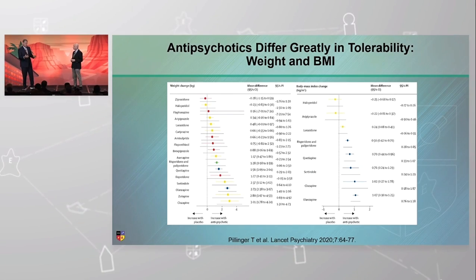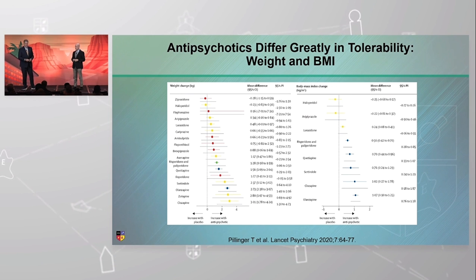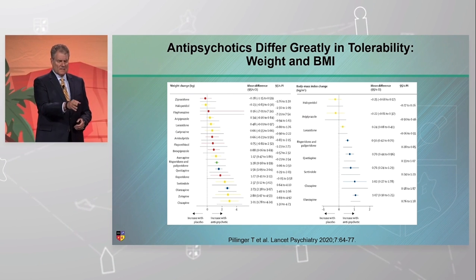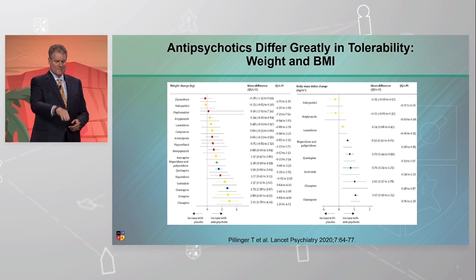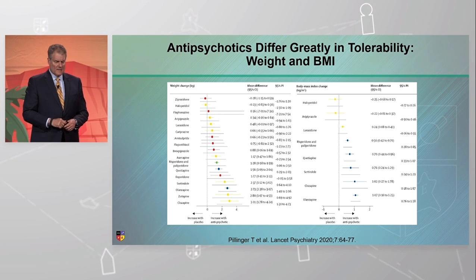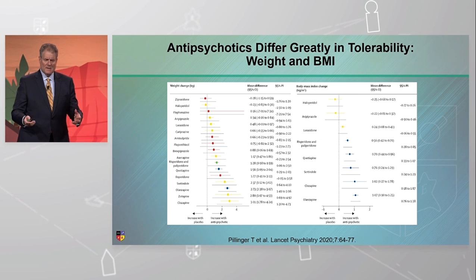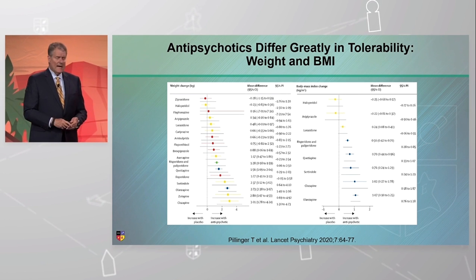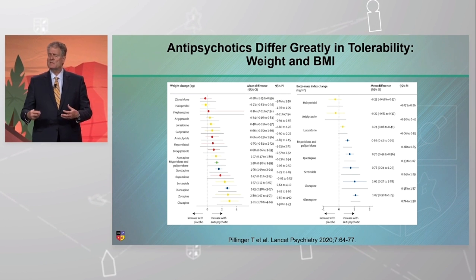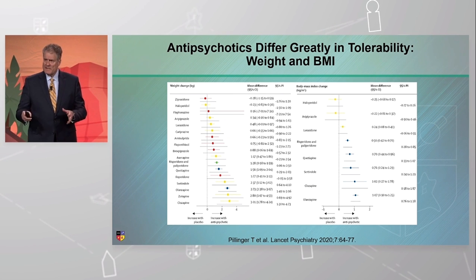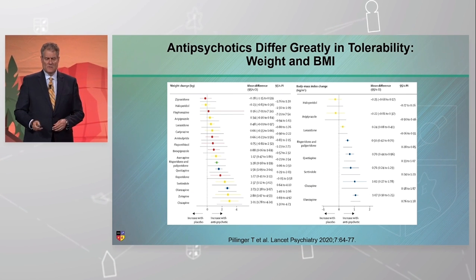Let's talk quickly about the differences in tolerability. They're listed from best on the top down to worst, and this is not necessarily surprising. The concept is they vary greatly, and sometimes this is very important. If you have somebody who's already overweight and has diabetes, you might be especially careful with using one of the high-risk drugs.